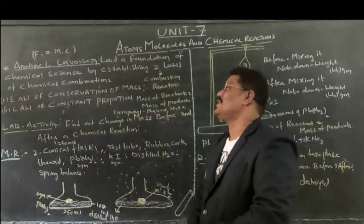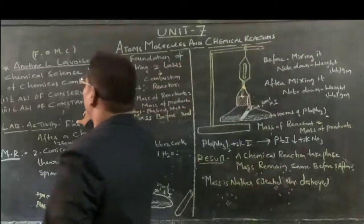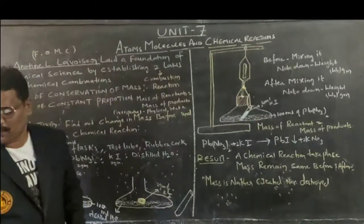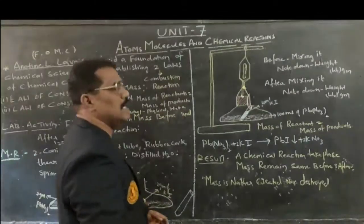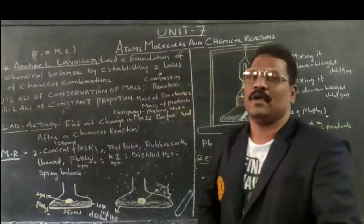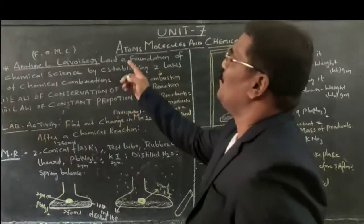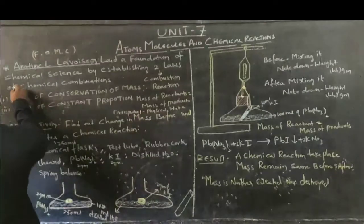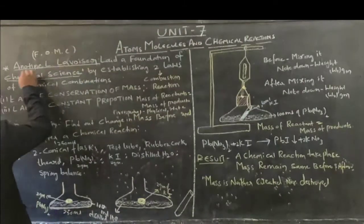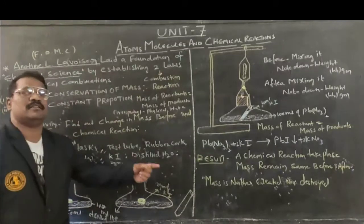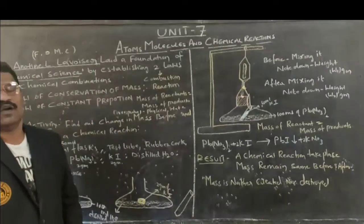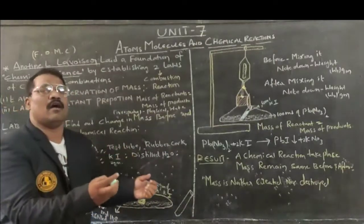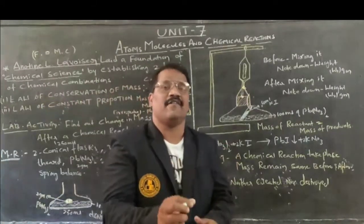Before going into the lab activity, and why this particular lab activity we are going to perform, let me study the results. When chemistry was established, his name is called Anthony L. Lavoisier, who is also known as the father of modern chemistry. He laid a foundation in chemical science, by establishing two laws. What are those two laws? Law of conservation of mass, as well as law of constant proportion, or definite proportion.